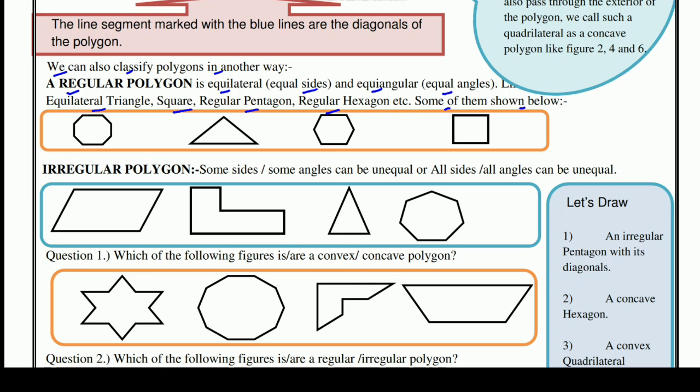If you look at the figures, they have equal sides — sides are equal. They are equiangular, meaning the angles are the same. If you look at the regular polygon figures, then the sides are the same and the angles are the same — they are equiangular.